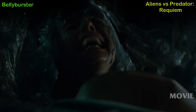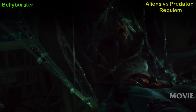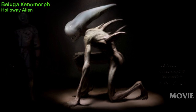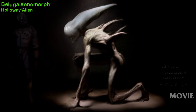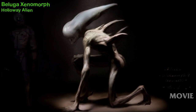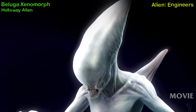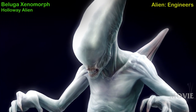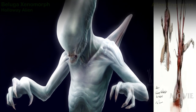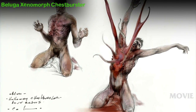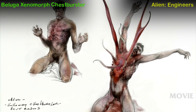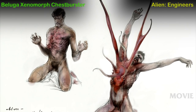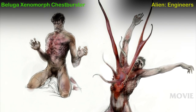Belly Burster — Aliens vs. Predator: Requiem movie, first appearance. Beluga Xenomorph, also known as Holloway Alien — Alien Engineers, a script that evolved into the Prometheus movie from which the Xenomorph was cut. Beluga Xenomorph Chestburster — also from Alien Engineers, a script that evolved into the Prometheus movie from which the Xenomorph was cut.